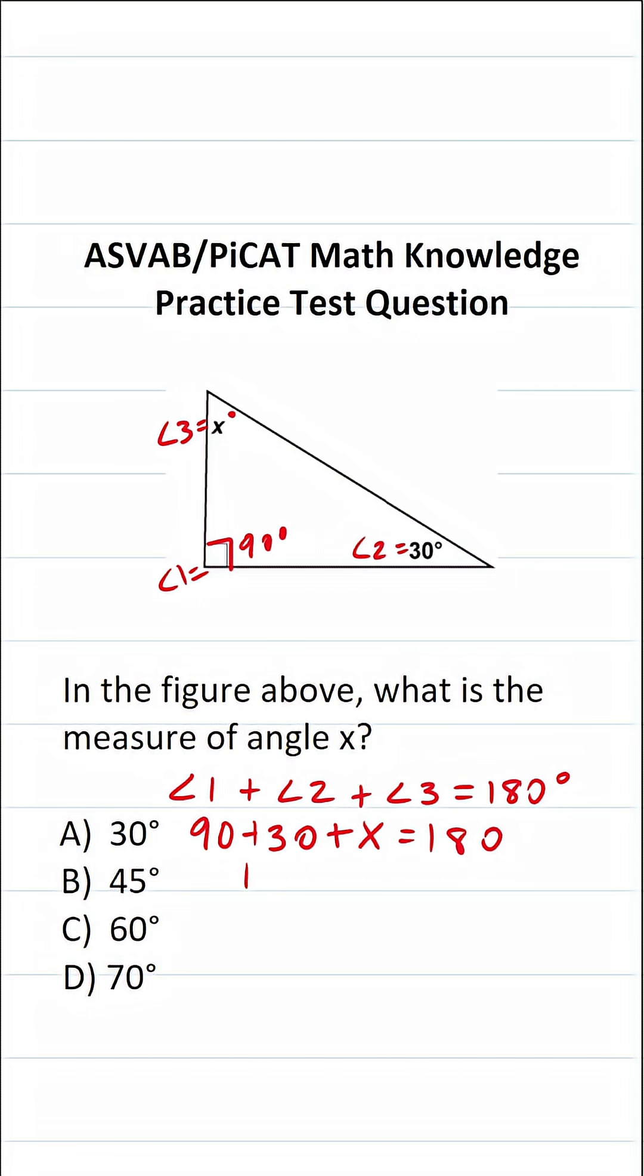90 and 30 is going to be 120. So this is 120 plus x equals 180. To get x by itself, we'll subtract 120 from both sides of this equation.